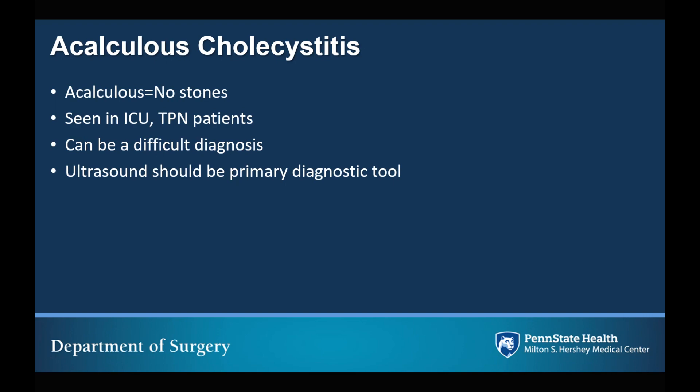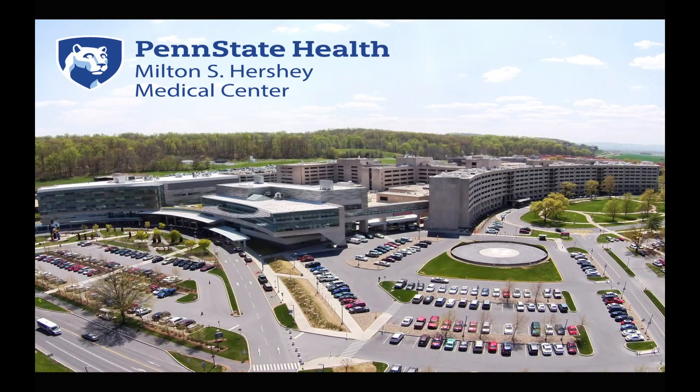Finally, acalculous cholecystitis is very rare and something you don't encounter very often — in fact, it's encountered much more often on exams than in actual clinical practice. The name acalculous tips you off to the fact that this is cholecystitis without the presence of gallstones. It's typically seen in ICU patients or in patients on TPN and can be a very difficult diagnosis. Ultrasound is used as the primary diagnostic tool. And that concludes our lecture on right upper quadrant abdominal pain and the disease processes that drive it. Thank you for your attention.